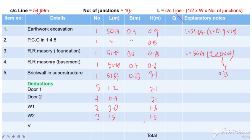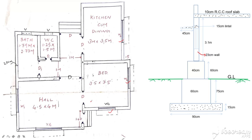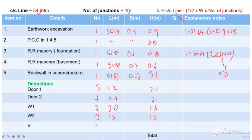We also have a ventilator — ventilator number 2 — with dimension 1 m by 0.6 m. Now we have a ventilator, door, and windows. The brick wall is 0.23 m.